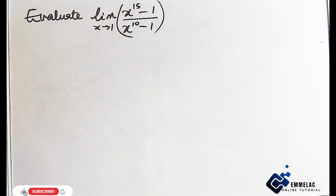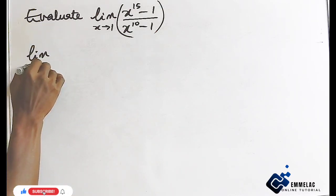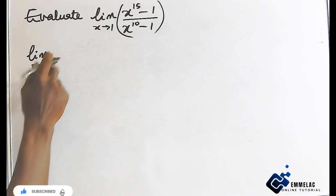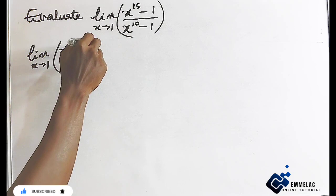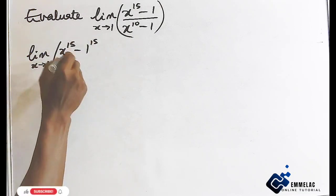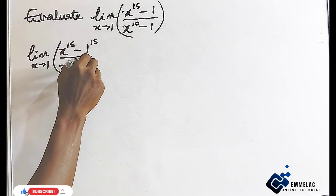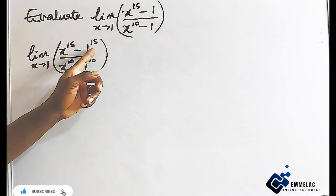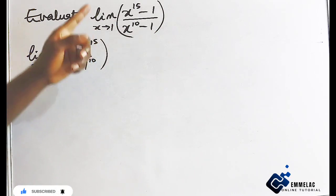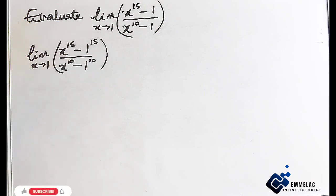Now we can rewrite this function as this: as x approaches 1, x to the power of 15 minus 1 raised to the power of 15, over x raised to the power of 10 minus 1 raised to the power of 10, because we know that 1 raised to the power of 15 is equal to 1, and 1 raised to the power of 10 is equal to 1.